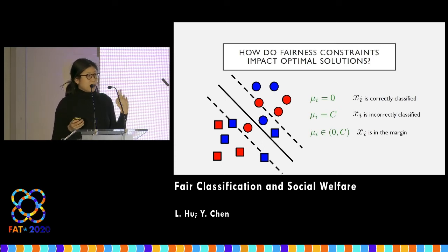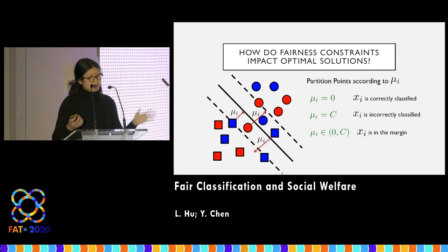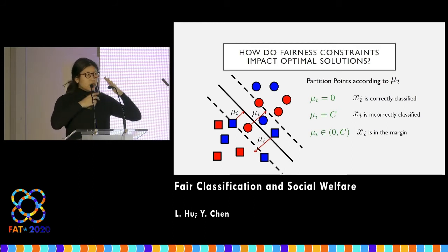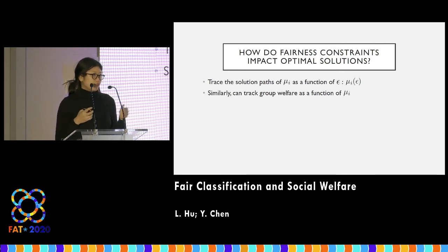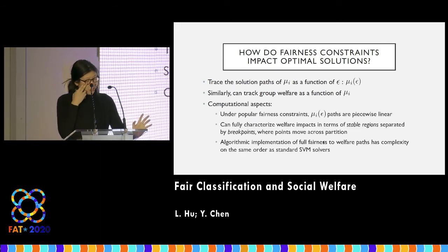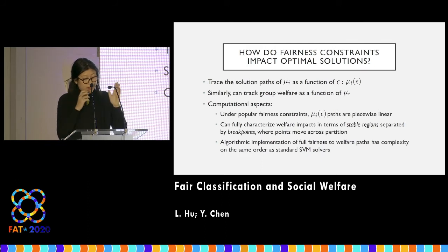We've reduced the problem from tracking actual values of decision points to just tracking the partition — where individual points fall in these three sets. As we tighten and loosen the fairness constraint, the decision boundary shifts, points float across into the margin or onto the other side, and we track when those sets change. We only need to think about break points where the partition has changed, and computing welfare means computing aggregate utilities at those specific epsilon points. These in-between regions are called stable regions, and oftentimes these paths are piecewise linear, which makes things even easier.